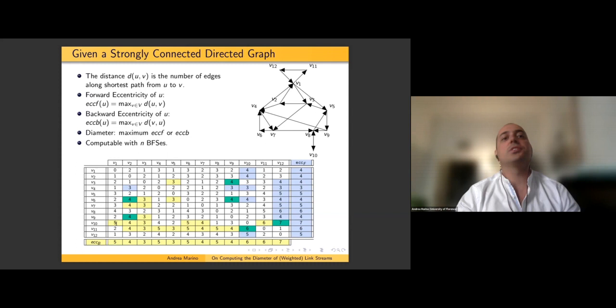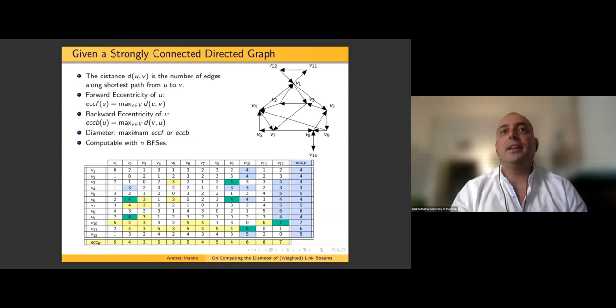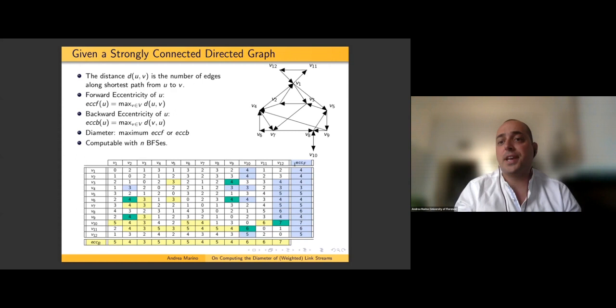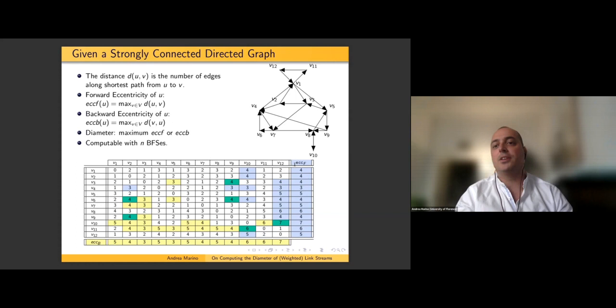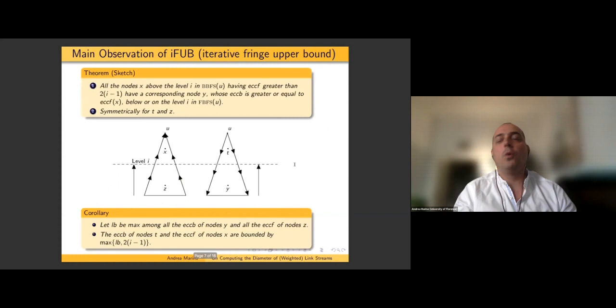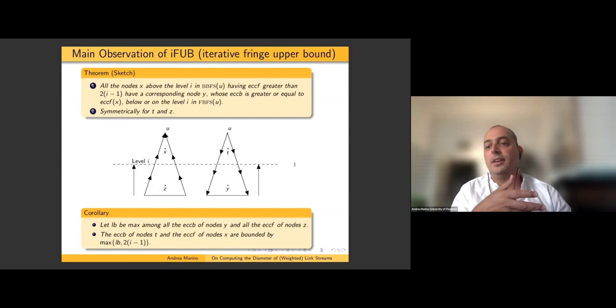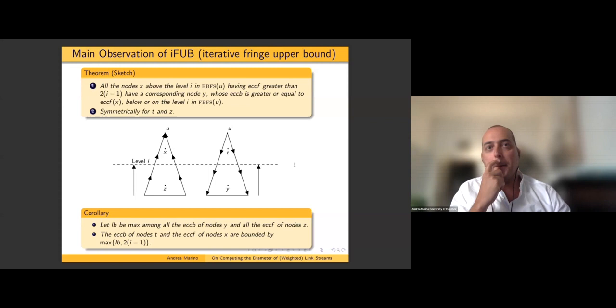In the distance matrix, the forward eccentricity corresponds to the maximum on the row and the backward eccentricity to the maximum on the column. The diameter is the maximum value in this matrix, equivalent to the maximum forward or backward eccentricity. Computing it naively requires n BFS traversals — for a graph like Facebook with 700 million nodes, that would never finish.